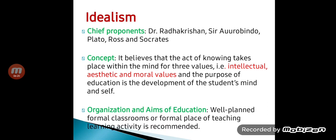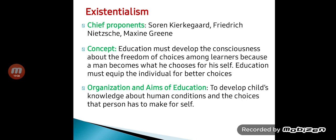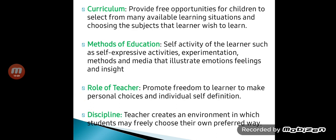In existentialism, education must develop consciousness about freedom of choice among learners, because a man becomes what he chooses for himself. The concept focuses on giving freedom to students to choose whatever subject they want to learn, and education must equip the individual for better choices. The aim of education is to develop the child's knowledge about the human condition and the choices a person must make in life.